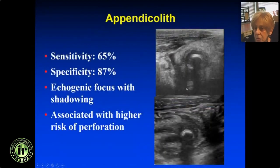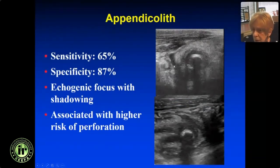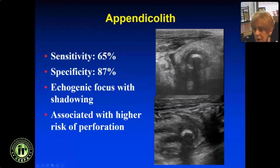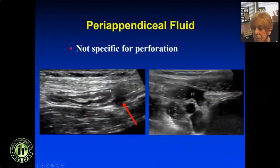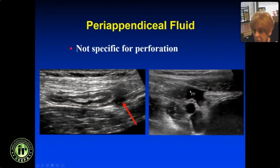You may see an appendicolith — that occurs in about 65% of cases. Its specificity for acute appendicitis is 87%, because sometimes you can get an appendicolith and the patient doesn't have acute appendicitis — it's an incidental finding. It's an echogenic focus with acoustic shadowing. The appendicolith is associated with a higher risk of perforation. You can see fluid around the appendix, but a little free fluid does not mean perforation — it's just reactive.